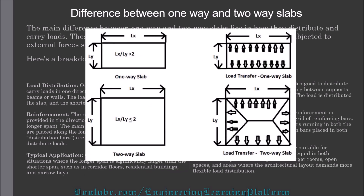This schematic drawing shows the load distribution difference between one-way and two-way slabs. For a one-way slab, the ratio of the spans is greater than 2, while for two-way slabs, the ratio of the span dimensions is less than or equal to 2.